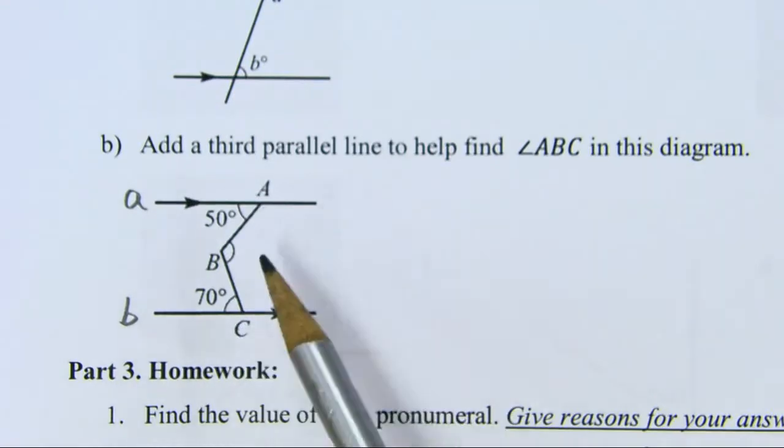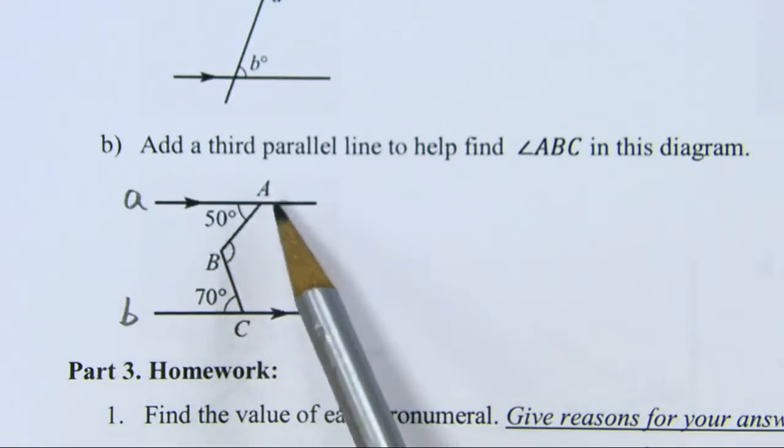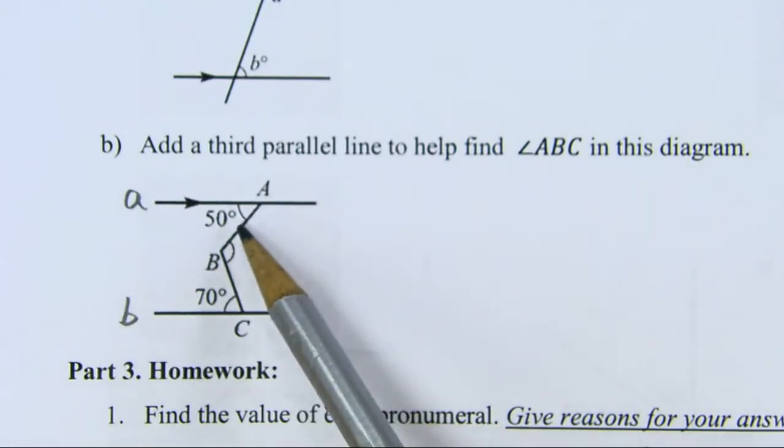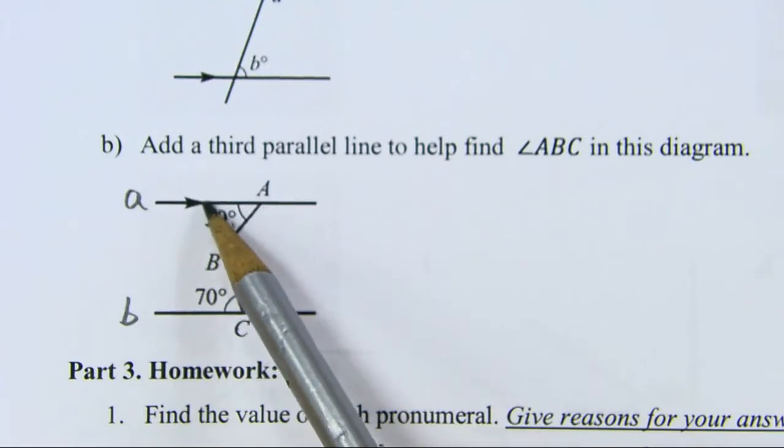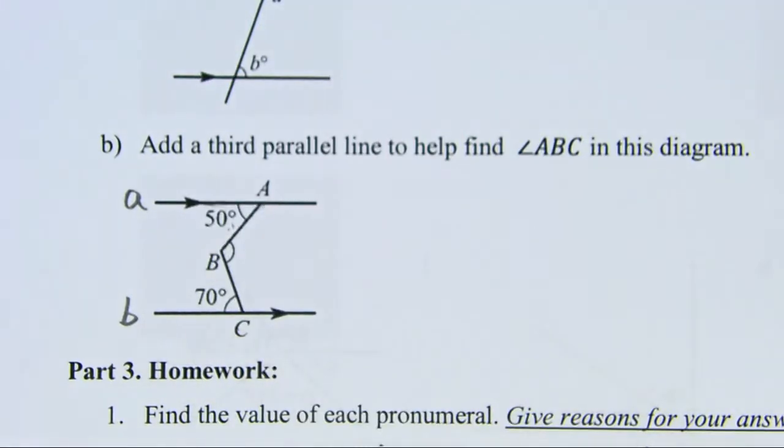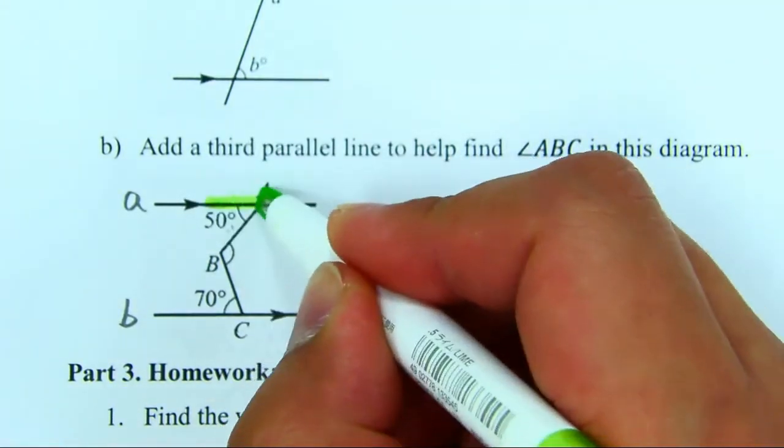I have to look at the relationship between the unknown angle and the angles you are given, 50 and 70. According to the information given, we can see we want to use this angle, so I highlight this angle here. We want to use 50 to find out angle ABC.